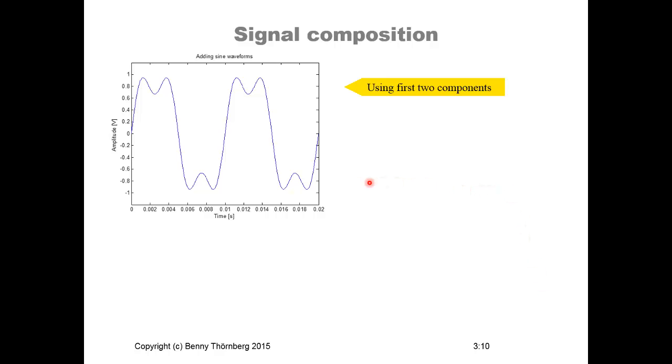And in the first case using just two components, then we will have here something that more or less starts to look like a square wave. Of course you have still the shape of some kind of wave, but it starts to look more and more like a square wave.